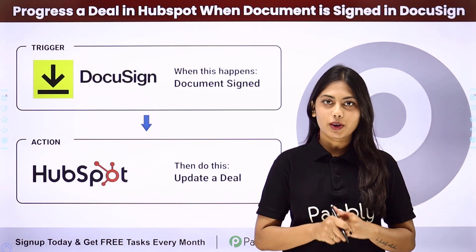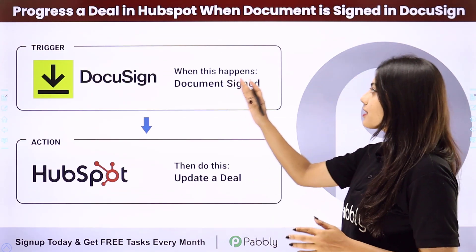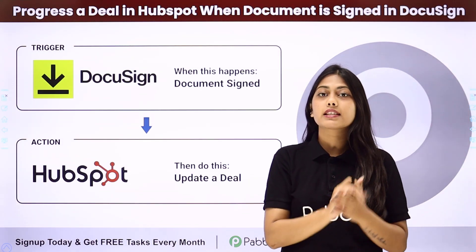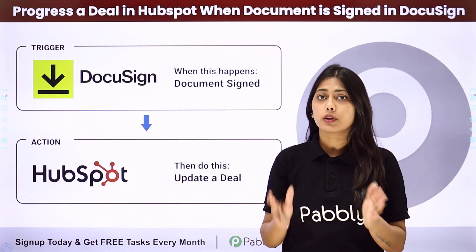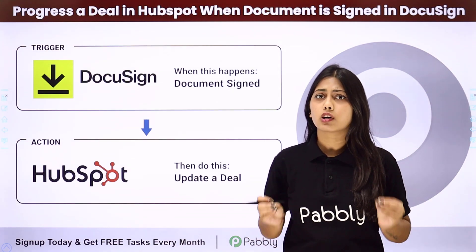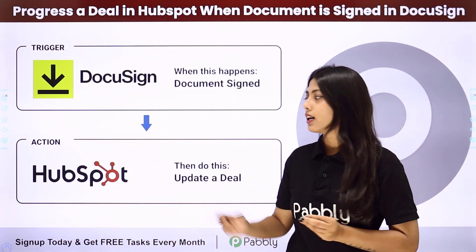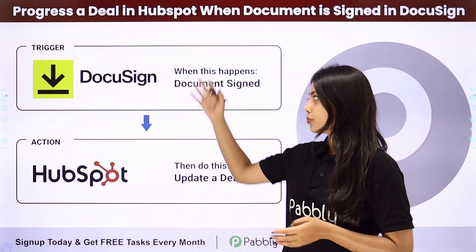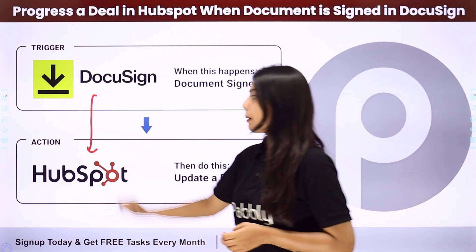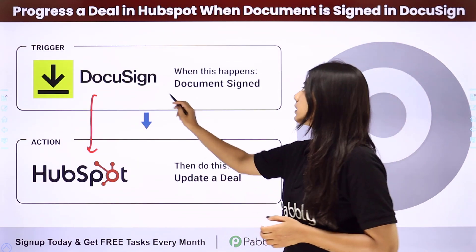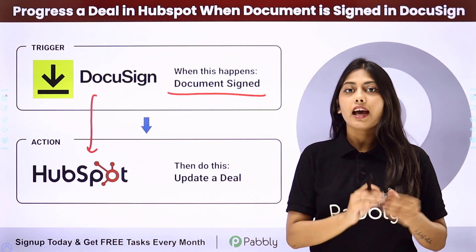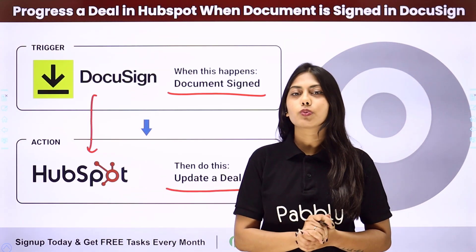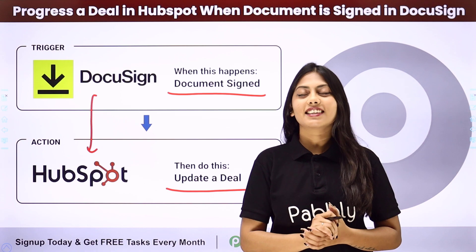Hello everyone. In this video we are going to learn how to progress a deal in HubSpot when a document is signed in DocSign. Whenever we send a document to a client or customer and that person signs the document, a deal will be updated in HubSpot. We are going to create an automation for this process by integrating these two applications using PablyConnect.